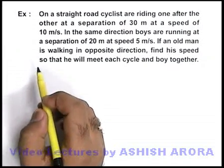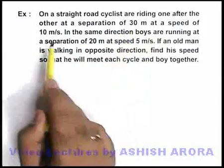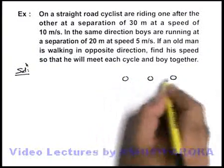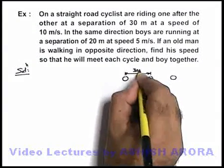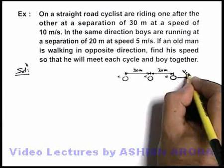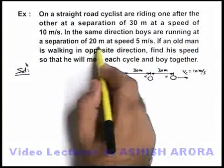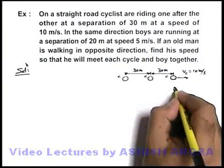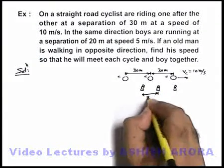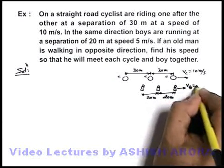Let's discuss an example based on relative motion in one dimension. On a straight road, cyclists are riding one after another at a separation of 30 meters at a speed of 10 meters per second. The velocity of cyclists is 10 meters per second in the same direction. A few boys are running at a separation of 20 meters at a speed of 5 meters per second, also moving in the same direction with V_B equal to 5 meters per second.